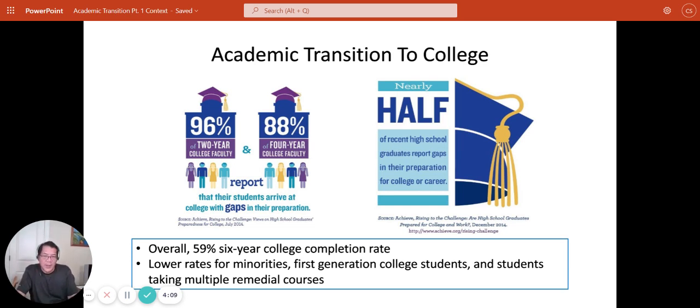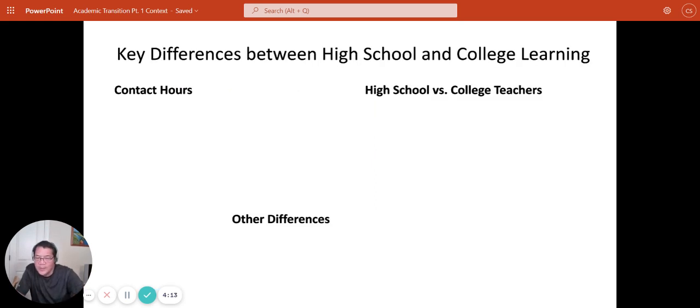Now, why might that be? You hear a lot about the dumbing down of high schools, but I don't really think that's the issue. I know many dedicated and skillful high school teachers. I think the difference has to do with the context between high school and college. There are some key differences between high school and college learning contexts.